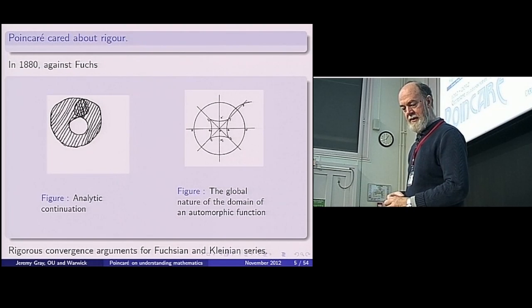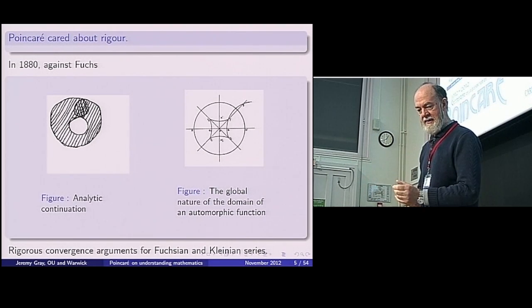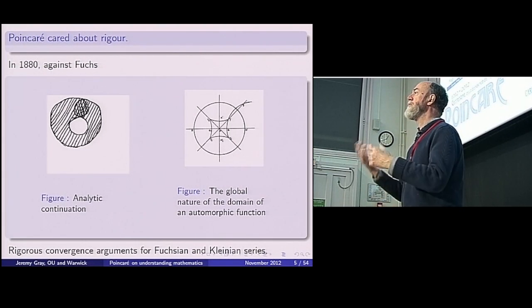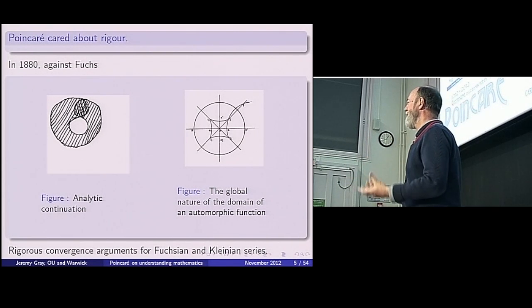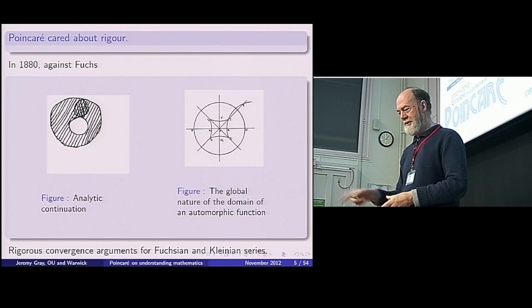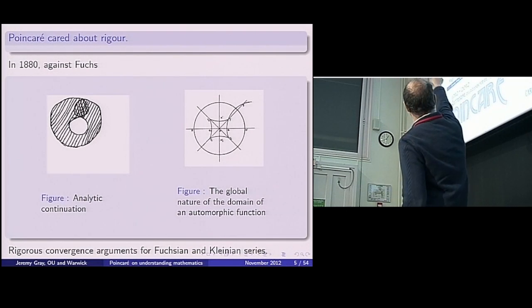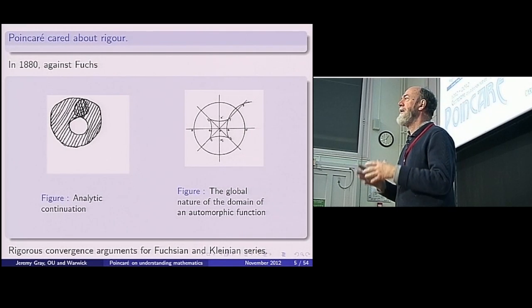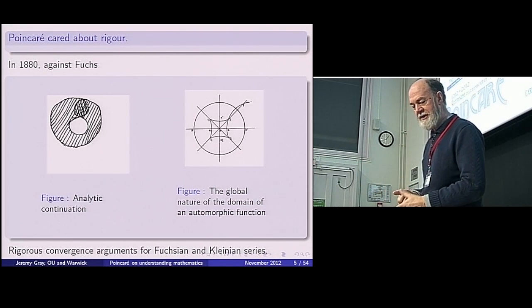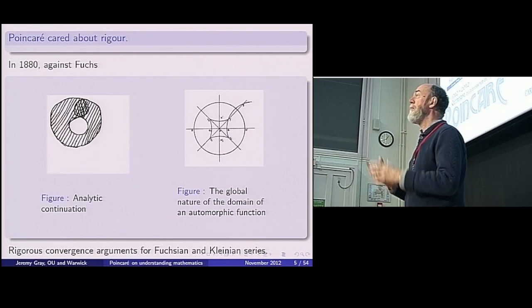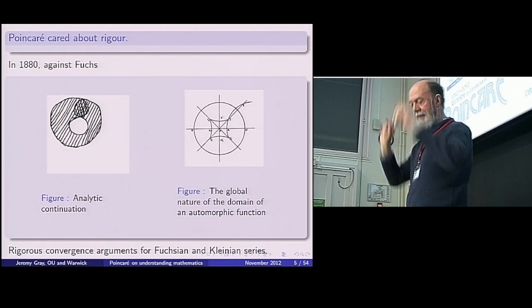I give two pictures from his early work. The context is indeed the invention of Fuchsian groups, and he has a correspondence with Fuchs in which he corrects the elder man's mathematics in respect of analytic continuation. That's the picture of the annulus you see. And where he has a much better grasp of the importance of the domain of the function under consideration. You see in the other picture the origin of a triangulation of the Poincaré disk.